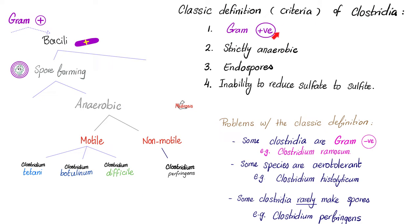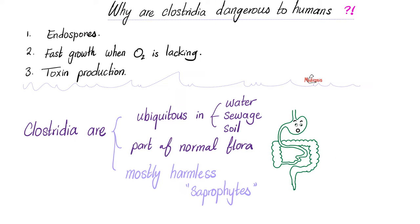Clostridia are gram-positive bacteria, strictly anaerobic. They make endospores. They are unable to reduce sulfate to sulfite. Why do we fear them? Because they are everywhere around you — they can make spores, produce toxins, and grow even when oxygen is no more, i.e., in anaerobic conditions.